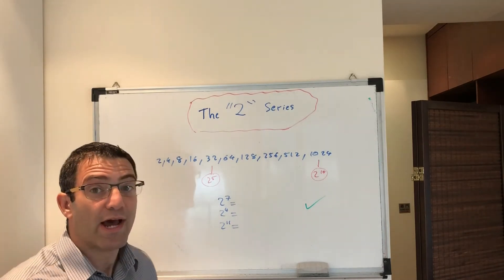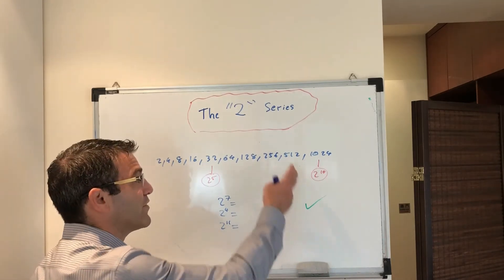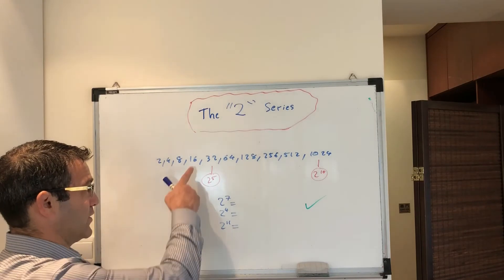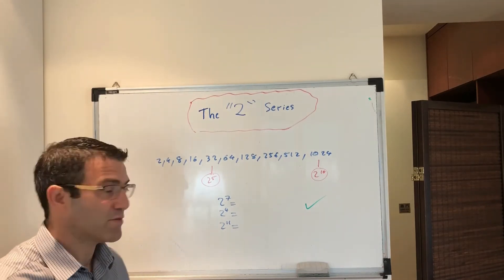Well, if you know that 2 to the 5 is 32 and 2 to the 10 is 1024, what is 2 to the power of 9? Oh, 512. It's the one before. What's 2 to the power of 4? It's 16. It's the one before 32.